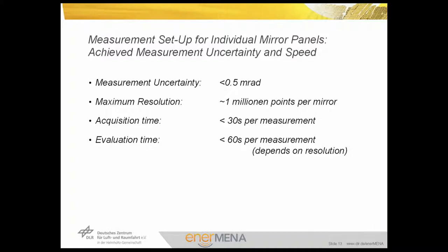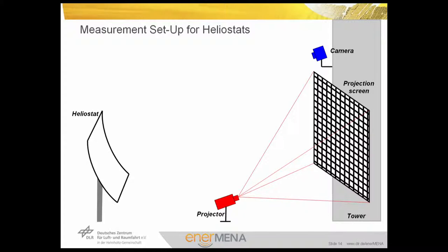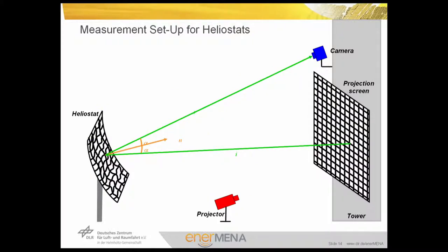For heliostats in a solar power tower application, we again have the heliostat itself, a projector in the heliostat field, and a projection screen normally mounted to the tower below the receiver. A camera mounted close to the projection screen sees the distorted pattern projected on the screen. The evaluation procedure is the same: by the pattern we can assign a spatial coordinate to both the projection screen and the mirror, and if the camera position is known we can calculate the local slope at each point of the heliostat.